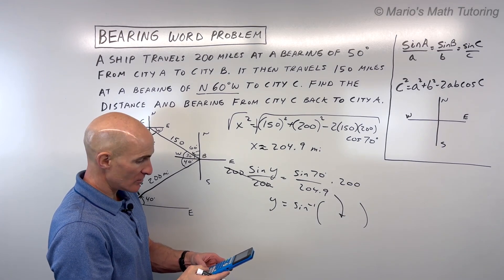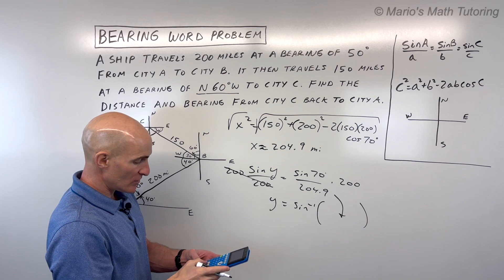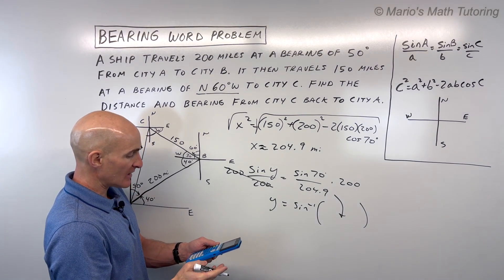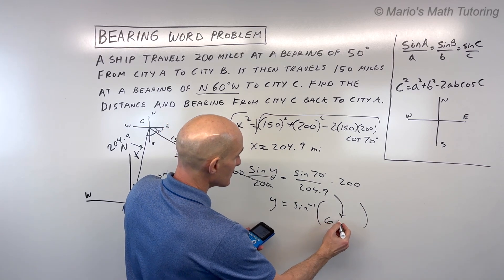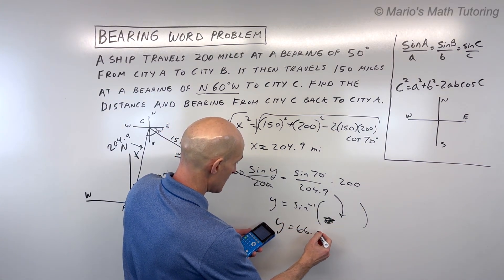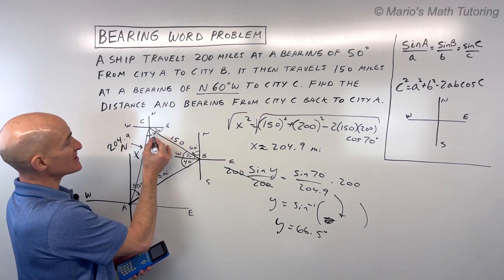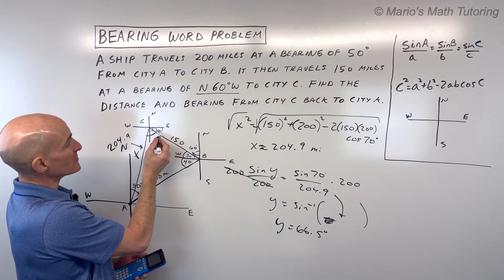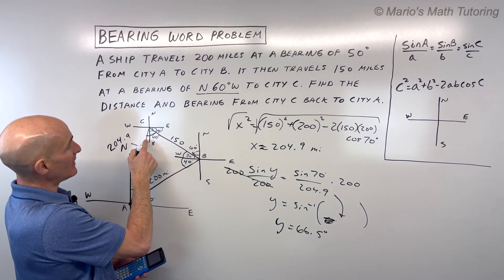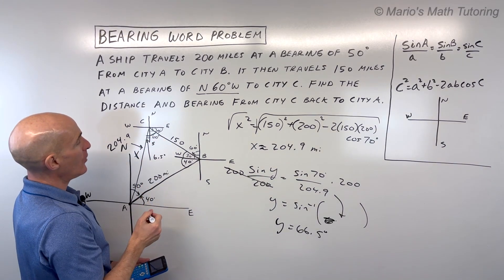Let's see what we get. 200 sine of 70 divided by 204.9 and take the sine inverse. I'm getting 66.5 degrees. So that's this whole angle right here, 66.5. Now, notice that this is a right angle. So if that's 30, this must be 60, which means that this little angle right here is 6.5 degrees.